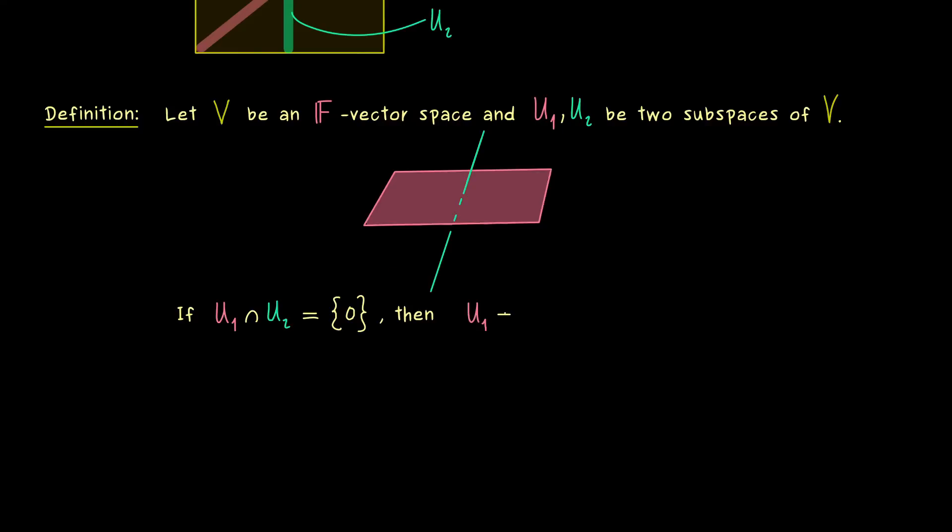So they don't share any direction in the vector space V. Hence, exactly in this case, we use a new symbol, which is a circled plus sign. And as you might already guess, this one is what we call the direct sum of the two subspaces.